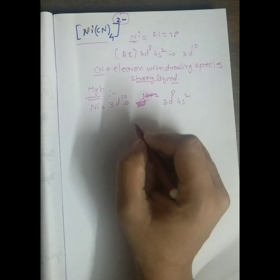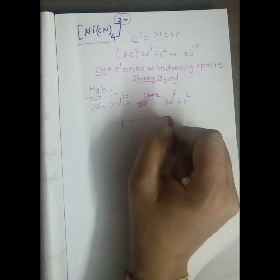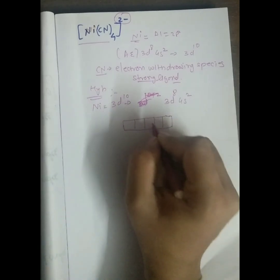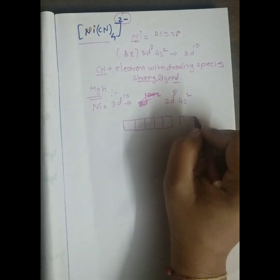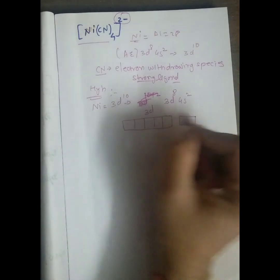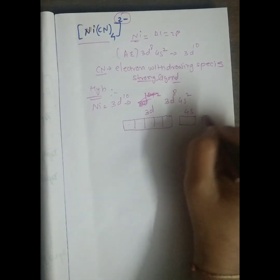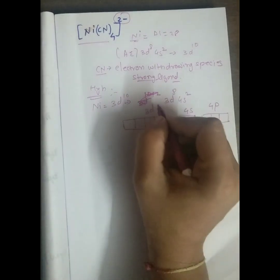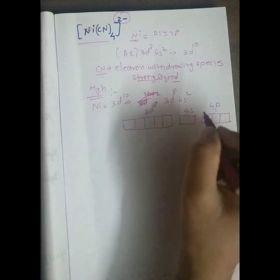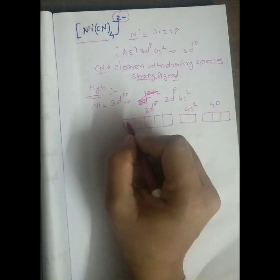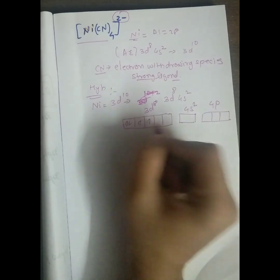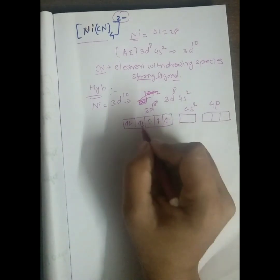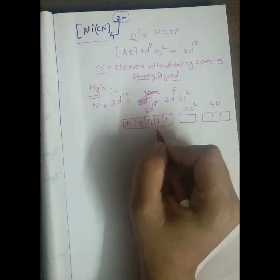While we are doing the hybridization we can write here the 3d box which has 5 orbitals: 1, 2, 3, 4, 5. And after 3d there is 4s, here is the 3d orbital, here is 4s and this is p orbitals which has 3 orbitals, that is 4p. The electrons are given, that is 8 electrons. In 4s there are 2 electrons: 1, 2, 3, 4, 5, 6, 7, 8. Here are 8 electrons.